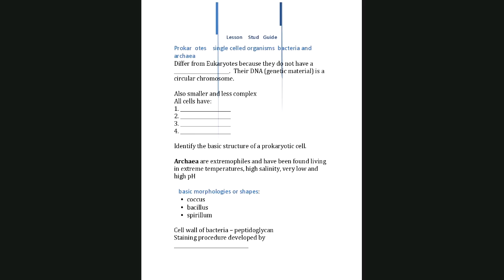Archaea are extremophiles living in extreme conditions. The basic morphologies or shapes of bacteria are: coccus — spheres that can grow in chains or clusters; bacillus — rod shapes; and spirillum — corkscrew shapes.